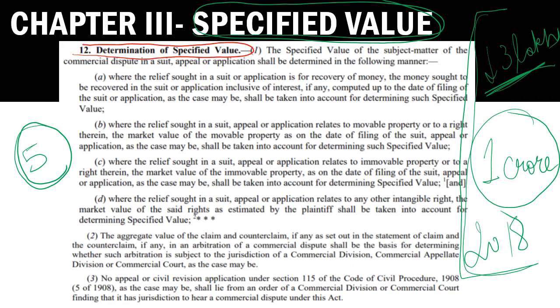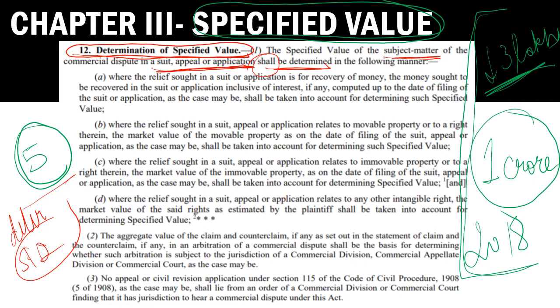The specified value of the subject matter of the commercial dispute — in any suit, appeal, or application that a commercial court deals with — shall be determined only on the following grounds. The word 'shall' has been used, meaning you cannot go beyond the five determinants given in Section 12. The first thing to note is the manner or method of determination. (A):